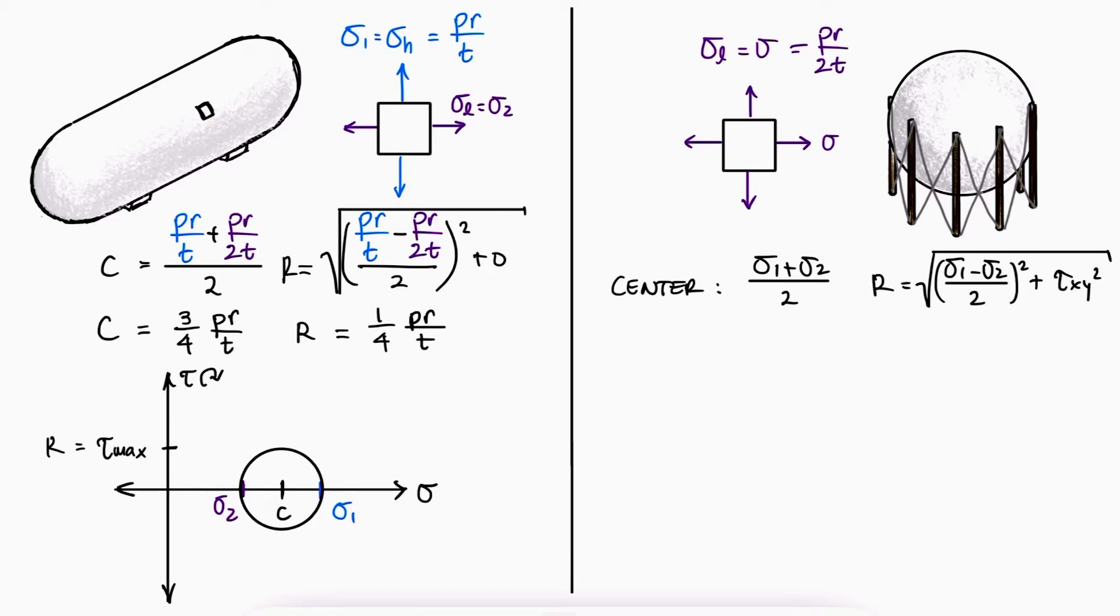Now, remember that this is the in-plane maximum shearing stress. The overall maximum shearing stress is the value of the radius for the circle that encompasses all principal stresses, including that in the third dimension. Of course, the normal stress into or out of the plane stress element is zero, which means that the third principal stress is zero, and therefore the circle that encompasses it all has a radius of half its diameter at pr over 2t.